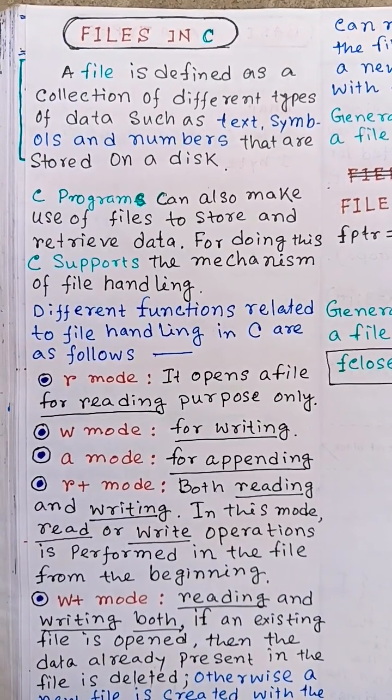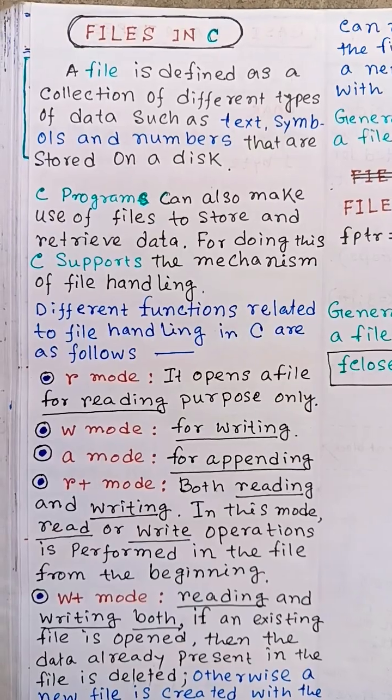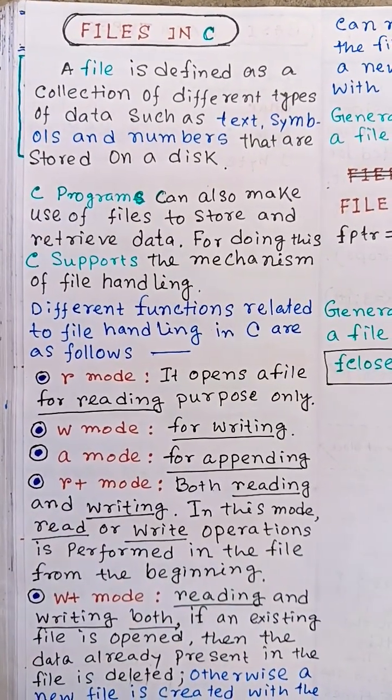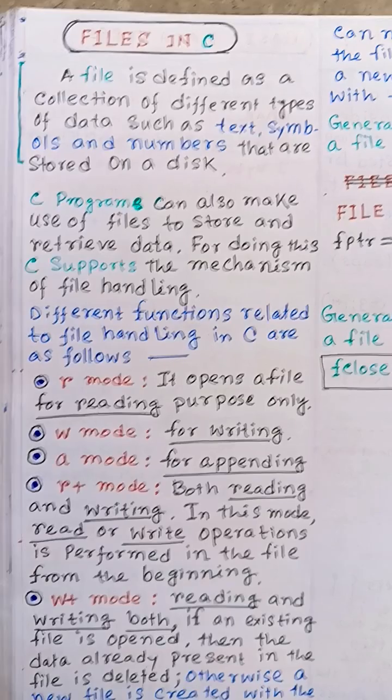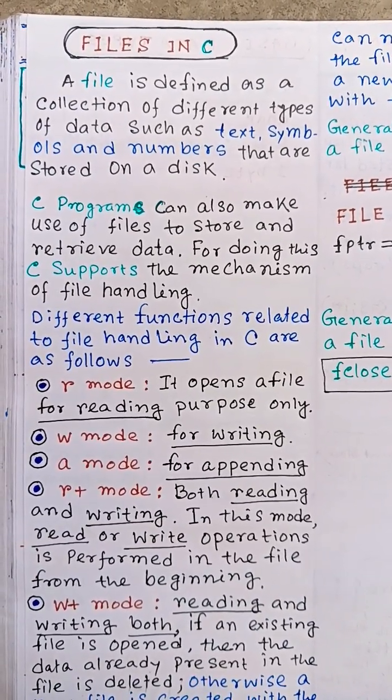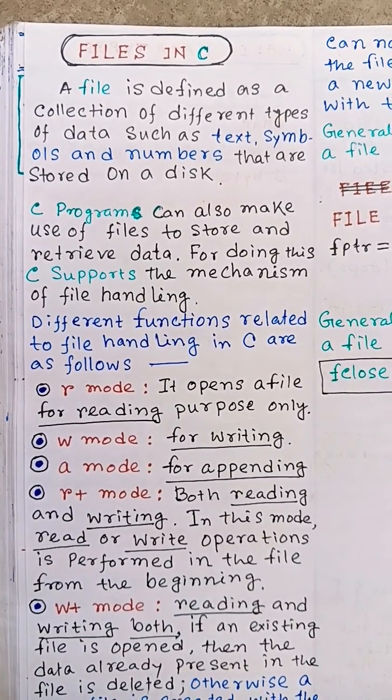W mode is for writing purpose only. A mode opens a file for appending purpose only. R plus mode opens a file for both operations, reading and writing. In this mode, read or write operations are performed in the file from the beginning.